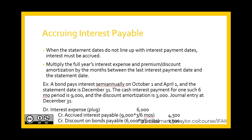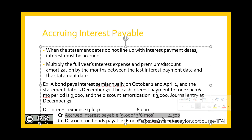Now looking at accruing interest payable: this occurs when the statement dates do not match up with the interest payment dates, so we must accrue for our interest. You would do so by multiplying the full year's interest expense and the premium or discount amortization by the months between the last interest payment date and the statement date. For example, if a bond pays interest semi-annually on October 1st and April 1st, and the statement date is December 31st, the cash interest payment for one six-month period would be $9,000 and the discount amortization is $3,000. The journal entry at December 31st would prorate both the $9,000 accrued interest payable and the discount on bonds payable for the three months between October 1st and December 31st.